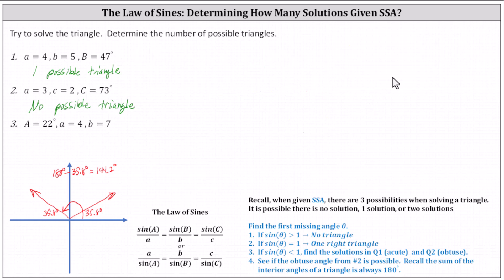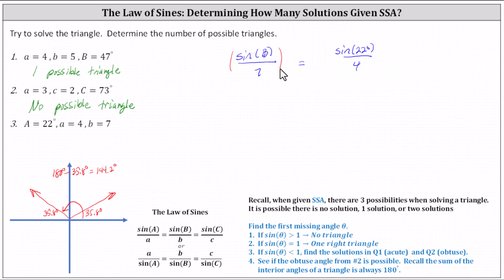Now let's take a look at number three. Angle A equals 22 degrees, the length of side A is four, and the length of side B is seven. Let's begin by determining angle B using the law of sines. We have sine of angle B divided by seven equals sine of 22 degrees divided by four. Solving for sine B by multiplying both sides by seven, we have sine B equals seven sine 22 degrees divided by four.